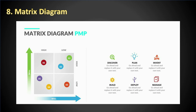A matrix diagram is defined as a new management planning tool used for analyzing and displaying the relationship between datasets. The matrix diagram shows the relationship between two, three, or four groups of information: L-shaped for two groups, C-shaped for three groups, and X-shaped for four groups.